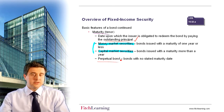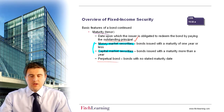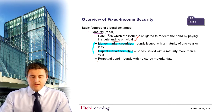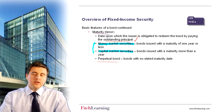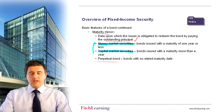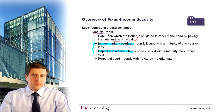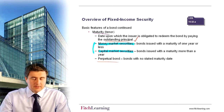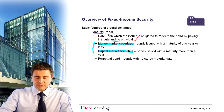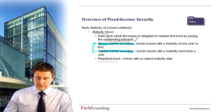Perpetual bonds are bonds with no stated maturity date. In the UK, there is a UK government bond known as a gilt, and there is a particular issue known as a war loan — a bond that pays a fixed coupon into perpetuity with no set redemption date. It could be that the company decides to redeem it, which will be upon notice to the bondholders. But upon purchasing that bond, you understand that there's no set date to redemption specified.